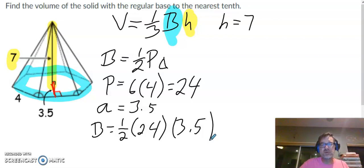Half of 24 is 12. 12 times 3.5 gives me the area of the hexagon, which is 42.